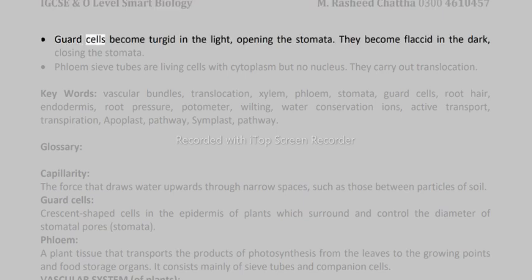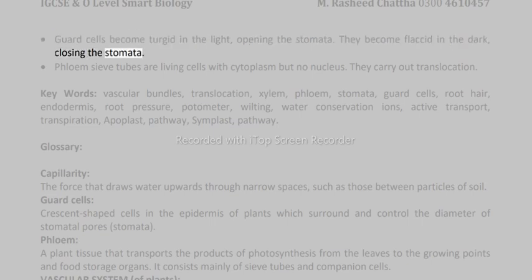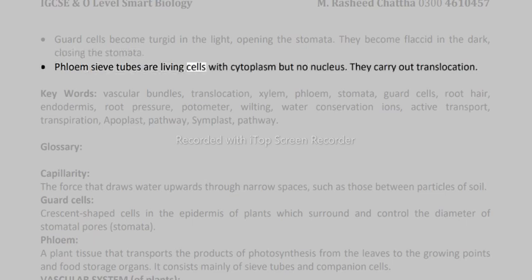Guard cells become turgid in the light, opening the stomata. They become flaccid in the dark, closing the stomata. Phloem sieve tubes are living cells with cytoplasm but no nucleus. They carry out translocation.